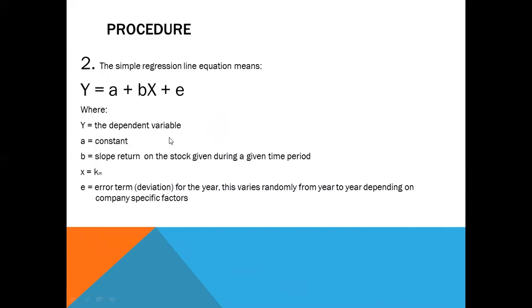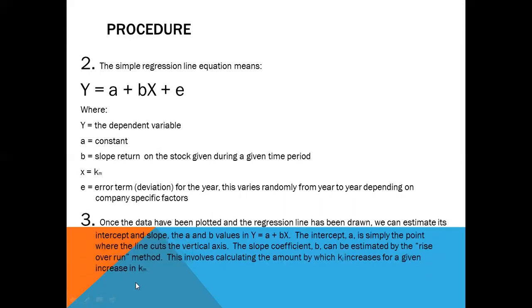Step two: the simple regression line equation means Y equals a plus bX plus e, where Y is the dependent variable, a is the constant, b is the slope return on the stock given during a given time period, X is equal to k sub m (the market), and e is equal to the error term deviation for the year. This varies randomly from year to year depending on company-specific factors.